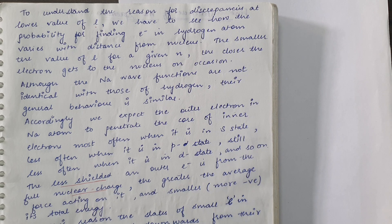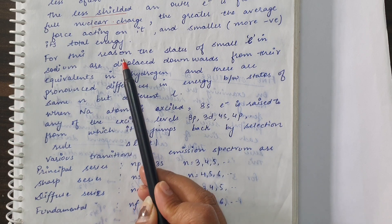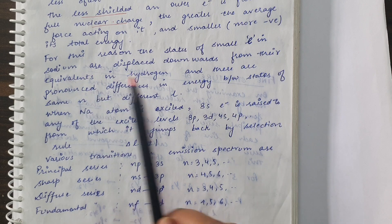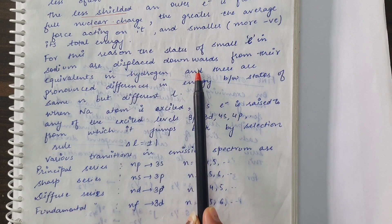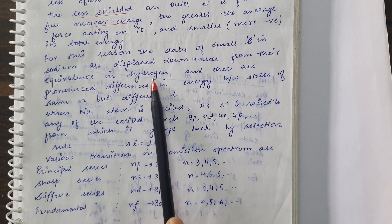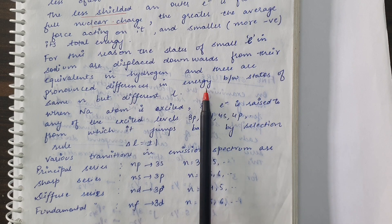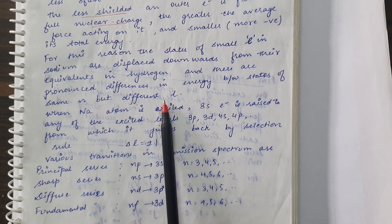As a result, the energy of the S state decreases the most. For P, since L is also small, the energy also decreases, but less than for S. Overall, the states with small L values in sodium are shifted downward compared to their hydrogen counterparts. Because of this, there will be quite a large difference in energy between states of the same N but different L.